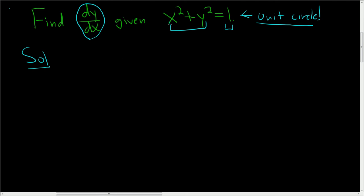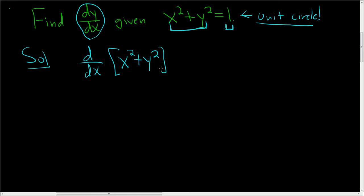To find dy/dx, we just take the derivative of both sides with respect to x. So we're going to differentiate the left-hand side with respect to x, and we're going to differentiate the right-hand side with respect to x. When we take the derivative of x squared, that's just 2x.